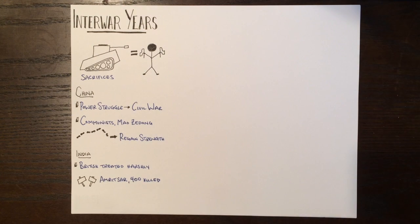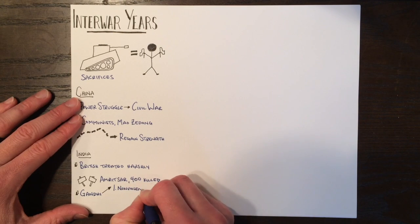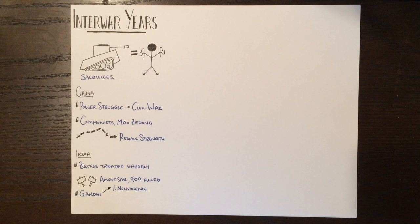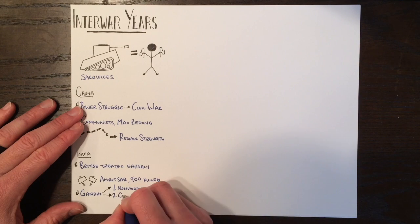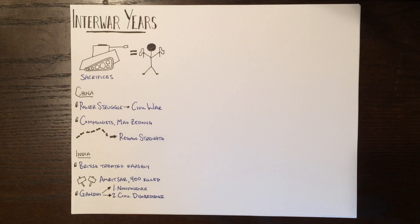Gandhi emerged as a leader against the British, and he believed in two things in their protests: nonviolence and civil disobedience to unjust laws.